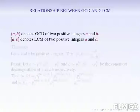First let me introduce the symbol for these terms GCD and LCM. GCD denoted by curved bracket and LCM denoted by square bracket. That is, GCD of two positive integers a and b is curved bracket (a, b), and LCM of two positive integers a and b is square bracket [a, b].